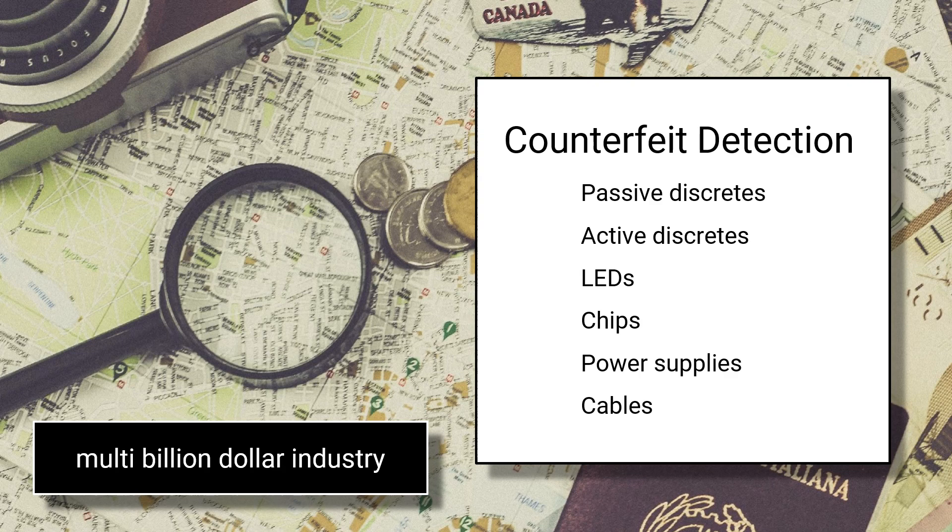A counterfeit can be a genuine part, sometimes older, sometimes used. They are often cleaned, rebranded, and sold as new. Buyers believe that they receive genuine parts because they only deal with ISO certified manufacturers, but the parts are sneaking in on a massive scale.